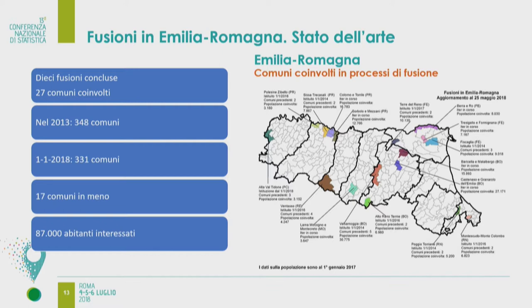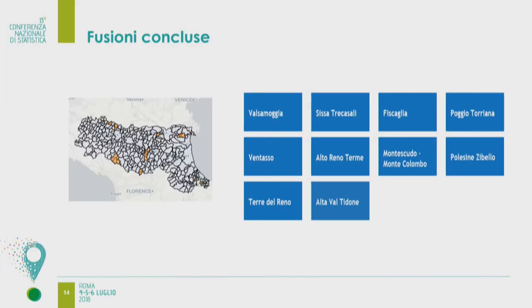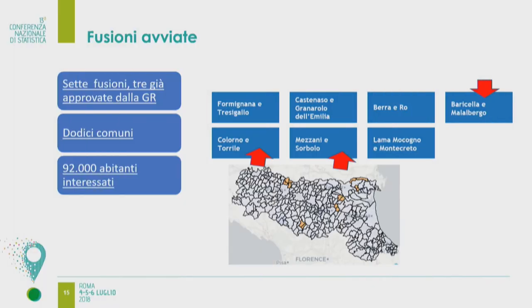Ci sono state 10 fusioni che hanno coinvolto 27 comuni, con 87 mila abitanti interessati e 17 comuni in meno. 87 mila abitanti hanno detto sì alle fusioni, contro 93 mila che avevano detto no. Non è un processo facile. Poi ci sono altre fusioni avviate: 7, di cui 3 già approvate dalla Giunta regionale, con 12 comuni e 92 mila abitanti interessati, che hanno già detto di sì.